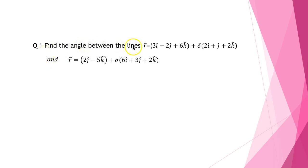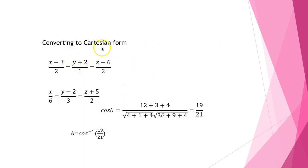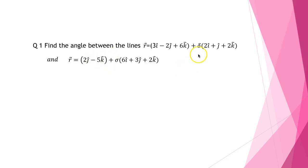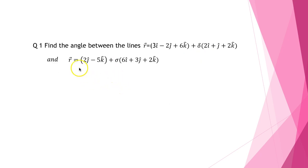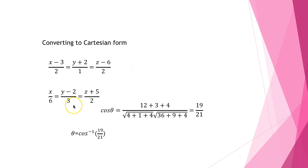Find the angle between the lines r = 3i − 2j + 6k + δ(2i + j + 2k) and r = 2j − 5k + σ(6i + 3j + 2k). Note that these lines are given in vector form. Converting to Cartesian form we get (x−3)/2 = (y+2)/1 = (z−6)/2 and (x−0)/6 = (y−2)/3 = (z+5)/2. So cos θ = (12 + 3 + 4) / (√(4+1+4) · √(36+9+4)) = 19/21. Therefore θ = cos⁻¹(19/21).